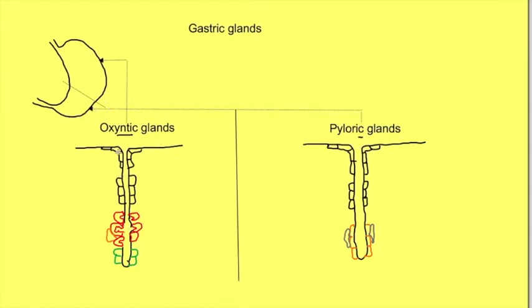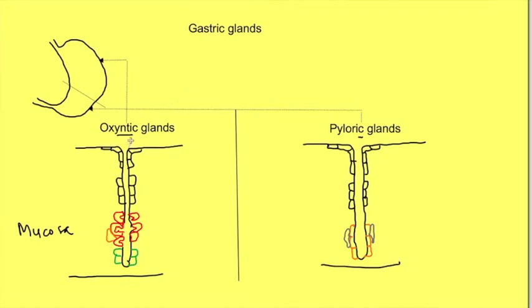This diagram shows that glands dip deep into the mucosa. Both types of glands are dipping into the mucosal layer, and their opening — known as the pit — is where they open into the lumen of the stomach. The pit continues as the lumen of the gland.